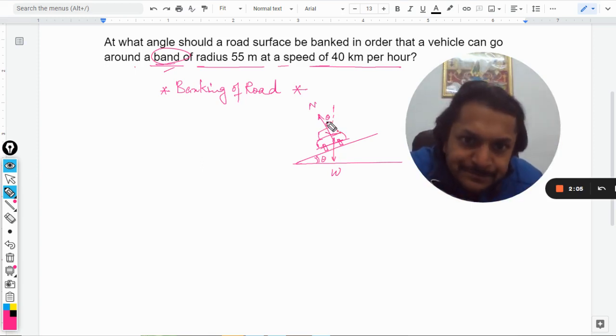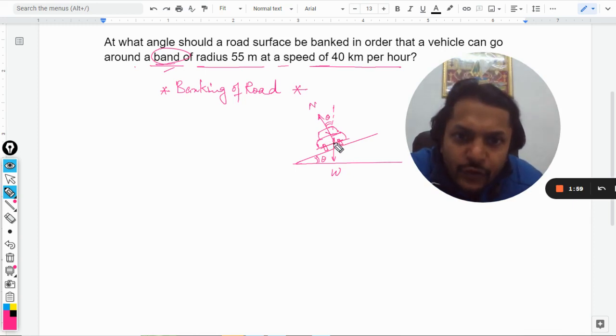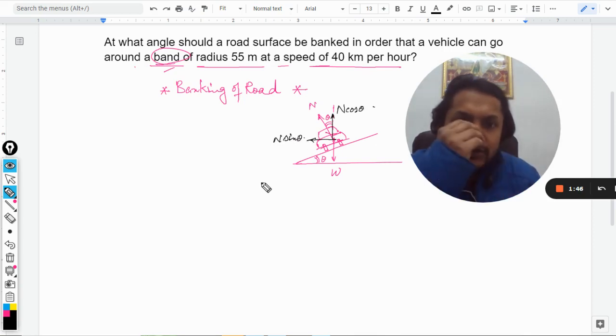Now you see, for the circular motion we need a centripetal force. So what we do is we divide this normal reaction into two parts, into two components. This will be taken as N cos theta and this will be taken as N sin theta.